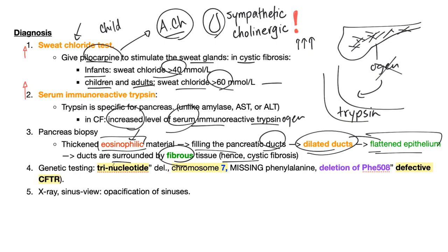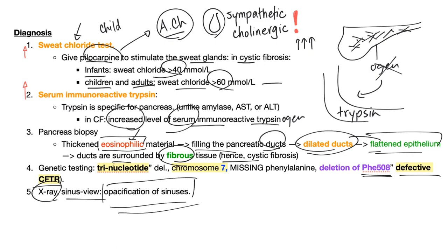You can do genetic testing because cystic fibrosis is a trinucleotide deletion on chromosome 7 — missing phenylalanine, or deletion of PHE508 — this is a defective CFTR. You can do an X-ray sinus view to look for chronic sinusitis; you'll find opacification of sinuses because thick secretions lead to chronic inflammation, which leads to opacification.